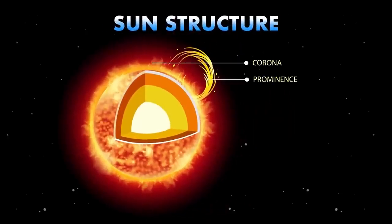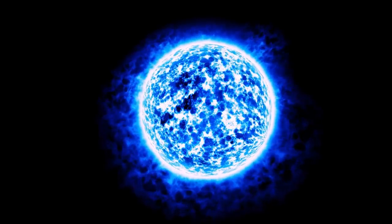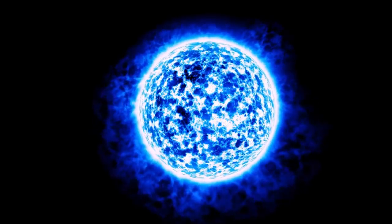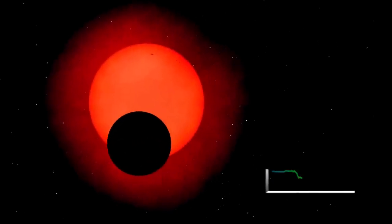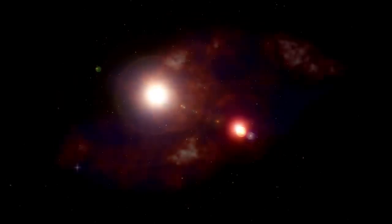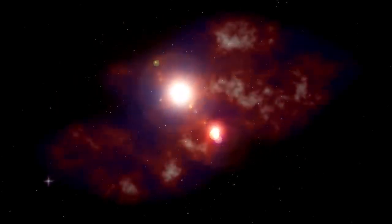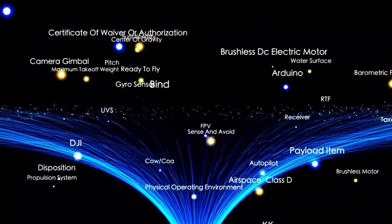The star would collapse in on itself in what's known as a core collapse supernova, an explosion so powerful it would release more energy in a few weeks than the sun will over its entire 10 billion year lifetime. During this event, Betelgeuse would briefly become as bright as the full moon, visible in the daytime sky. Despite how close it is in astronomical terms, Earth would remain unharmed by the explosion's radiation.